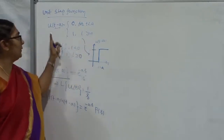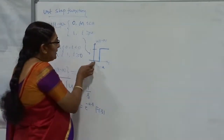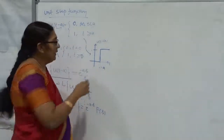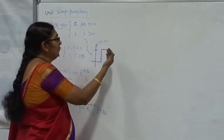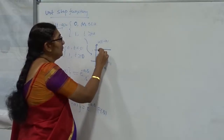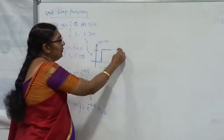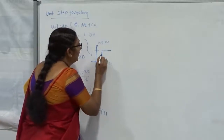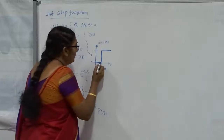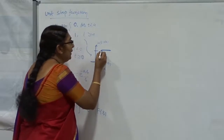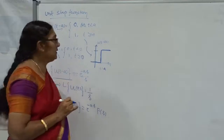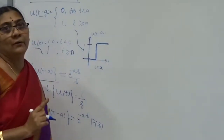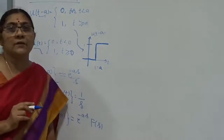Suppose you plot a graph of this unit step function. Up to less than A, it stays along 0 — we get a horizontal line along the X-axis. Once you reach A, suddenly it shifts up 1 unit and then moves as a horizontal line. So the graph looks like a staircase: first a horizontal line, then a sudden jump of 1 unit, then another horizontal line. Because they shifted by 1 value, this is called the unit step function or Heaviside unit step function.